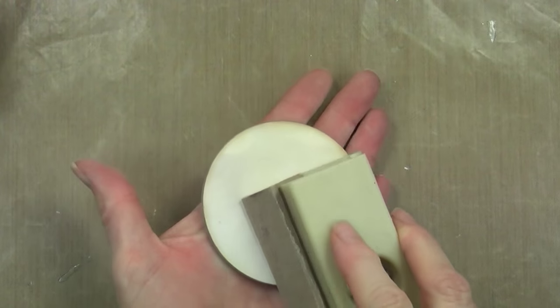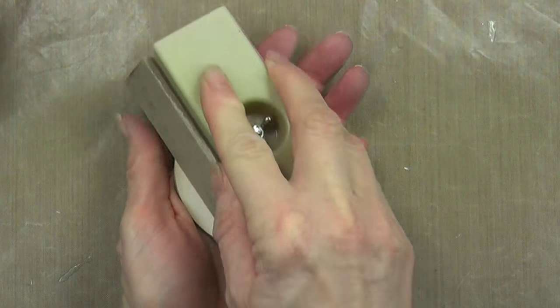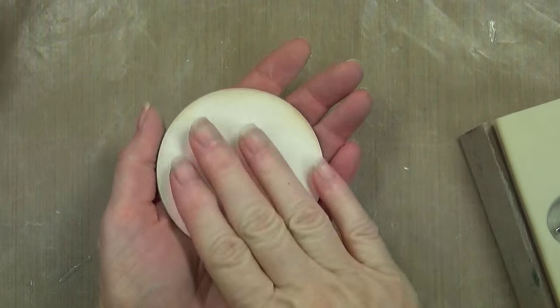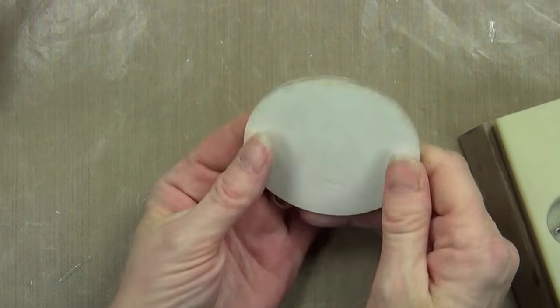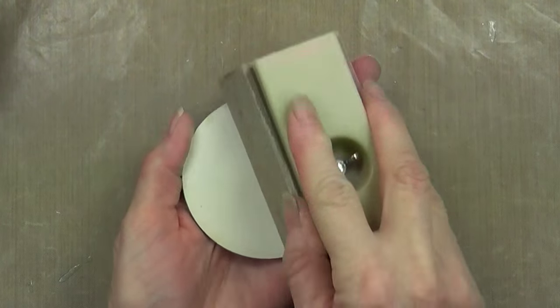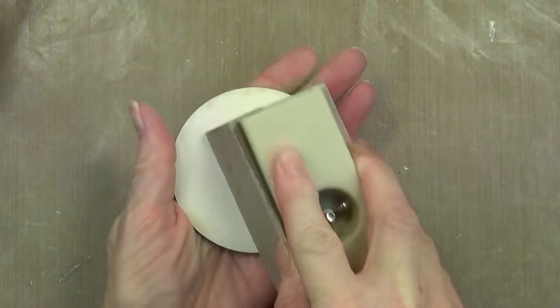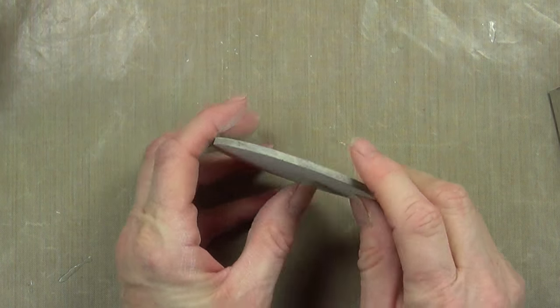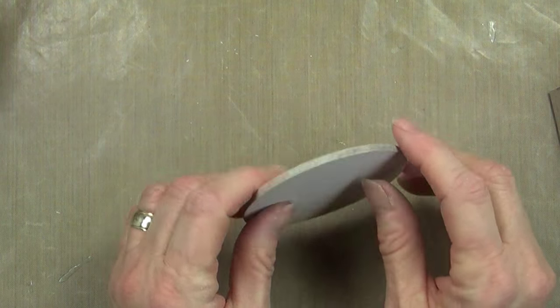So what I do is I put the gesso on the piece and then I lay it in my hand and I just lightly sand it and it gives it that nice soft baby bottom feel.